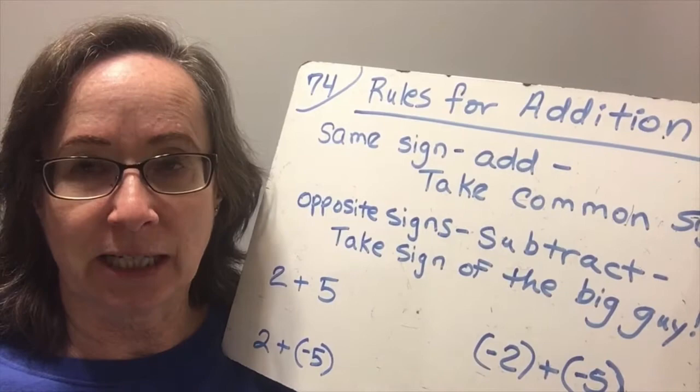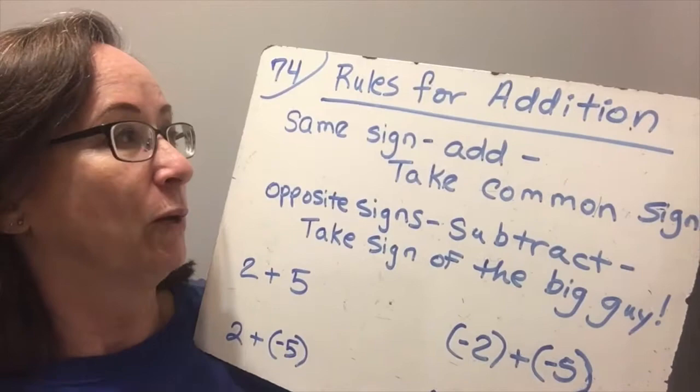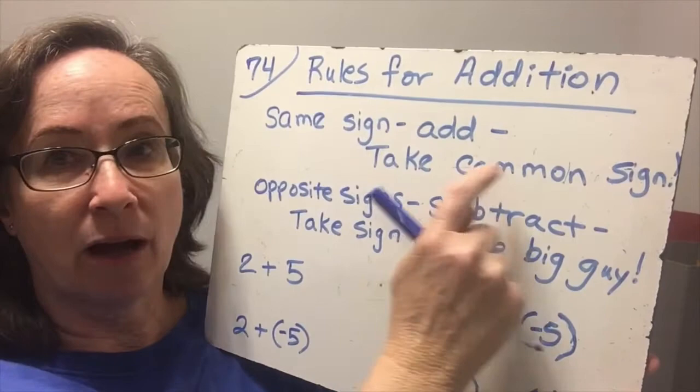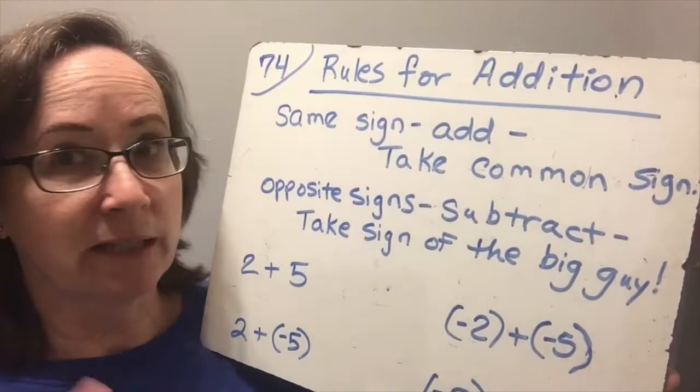So we have two rules. When we are adding same-signed numbers — when we have the same sign — this is all for addition: same sign, add, take the common sign. That's it. Same sign, add, take the common sign.